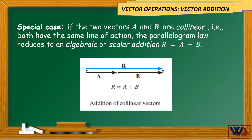There is a special case when adding two vectors. If the two vectors A and B are collinear, which means both have the same line of action, the parallelogram law reduces to an algebraic or scalar addition where you simply add A and B algebraically to get R.